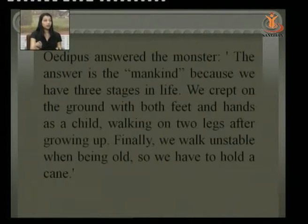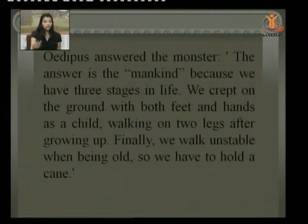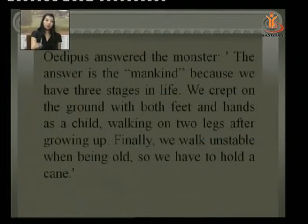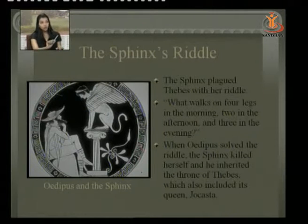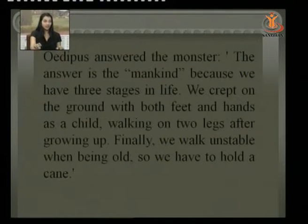When Oedipus answered the riddle, the Sphinx killed herself and he inherited the throne of Thebes, which also included Queen Jocasta. The answer Oedipus gave was 'mankind' — because we have three stages in life: as a child, we creep on all fours (four legs in the morning); when grown, we walk on two legs (the afternoon); and when old and unstable, we use a stick or cane (three in the evening).